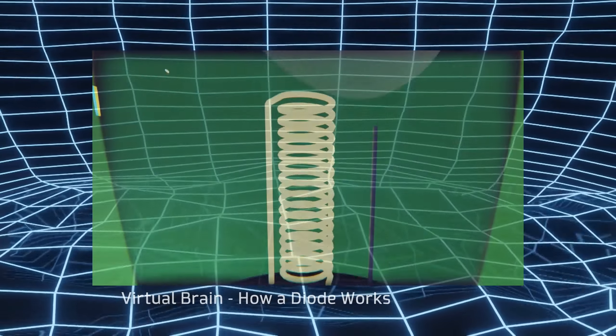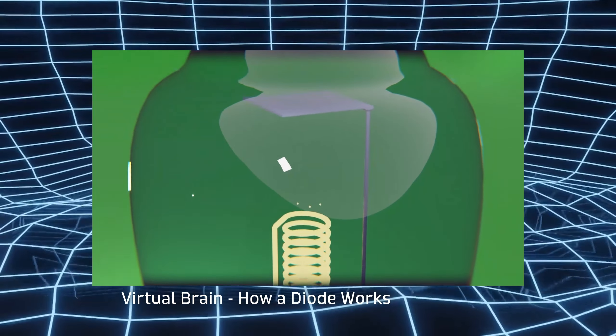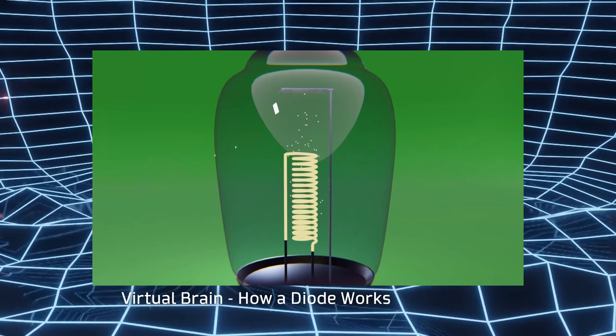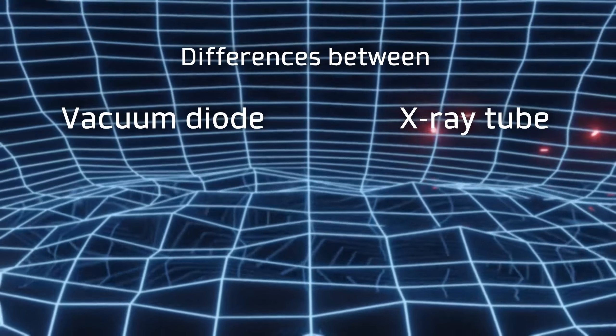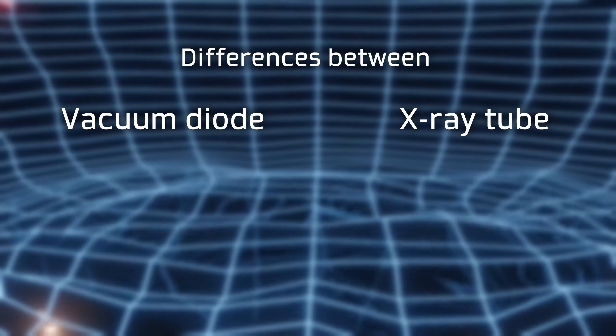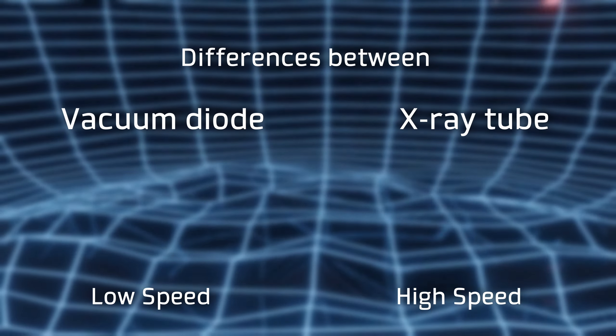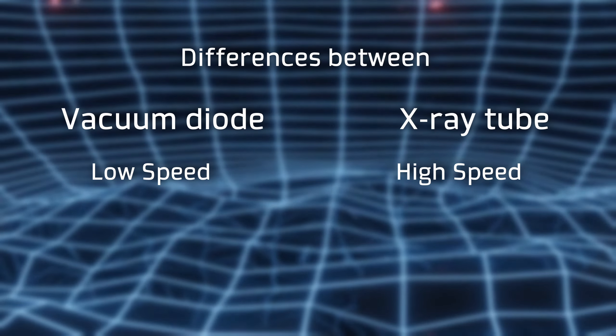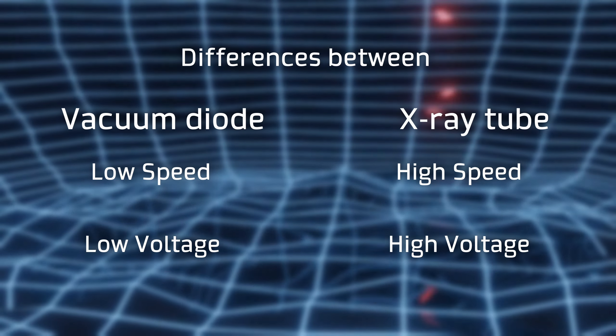If you already know a bit about electronics, this probably reminds you of vacuum diodes, which basically have the same configuration, and the truth is, they are indeed almost the same. The main difference between these two components is the voltage. The production of X-rays requires that electrons are accelerated to high speeds, and for this to occur, X-ray tubes are designed to operate at much higher voltages.